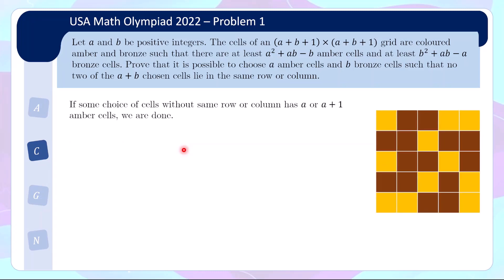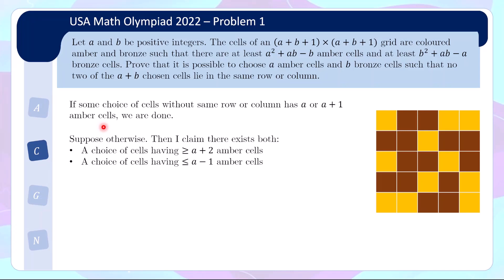We focus on picking A+B+1 cells with no two in the same row or column, and we're done if there are A or A+1 amber cells in that choice. Suppose otherwise — I claim that there will be some choice with at least A+2 amber cells, and also some choice with at most A−1 amber cells. We cannot have every choice with at most A−1, nor every choice with too many amber cells. Let's take a detour to prove this.